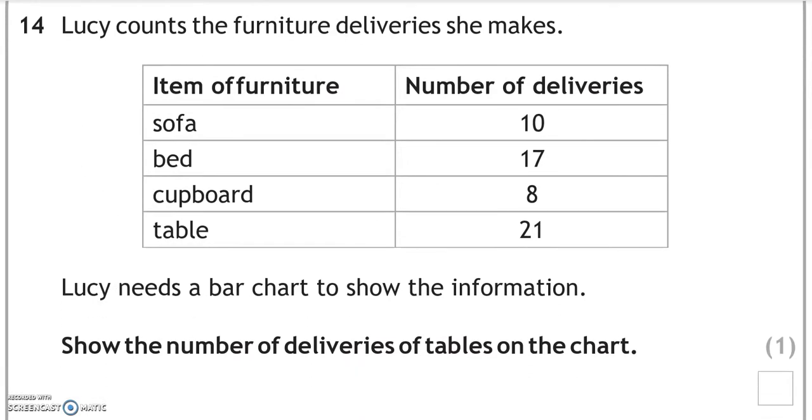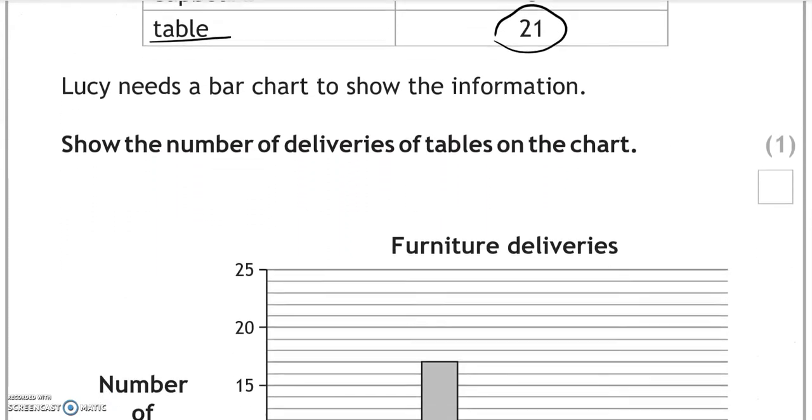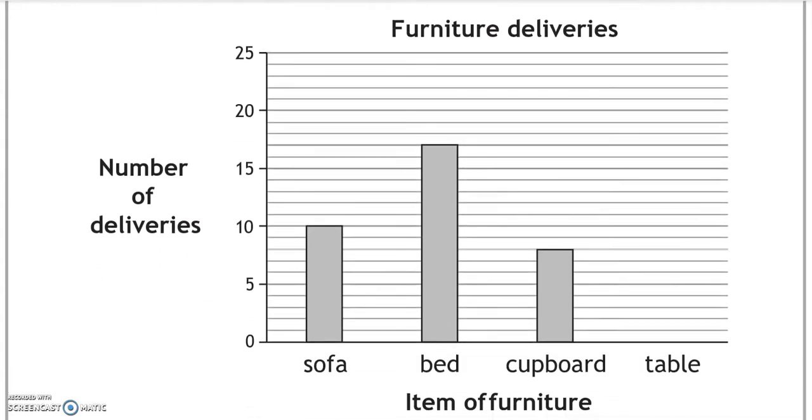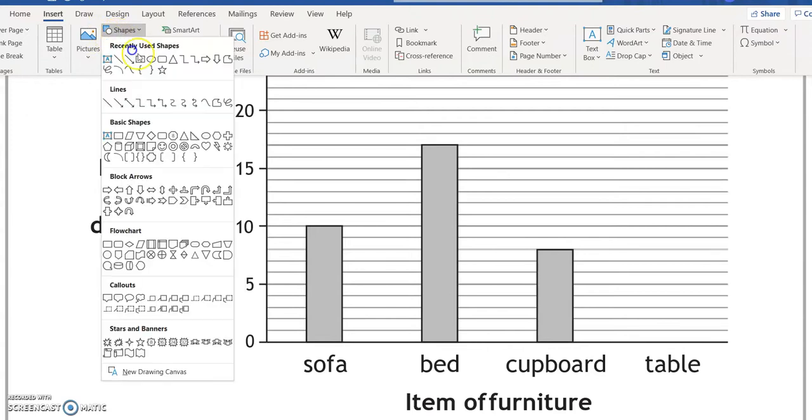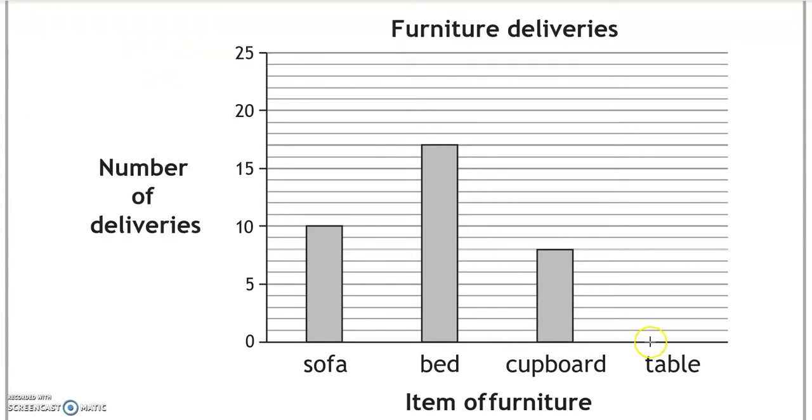Lucy counts the furniture deliveries she makes. Lucy needs a bar chart to show the information. Show the number of deliveries of tables on the chart. So tables 21. We're going to go up to 21. It needs to be same width as the other bars.